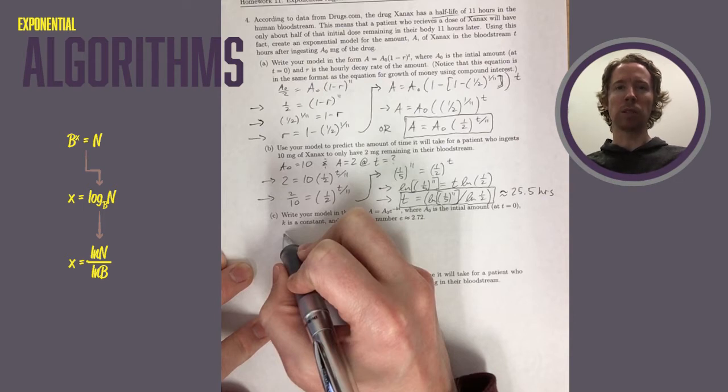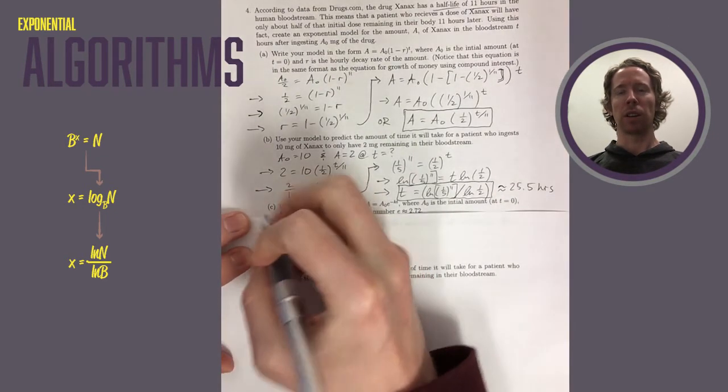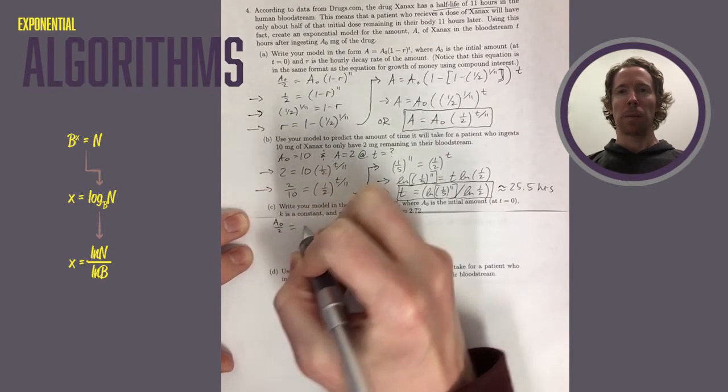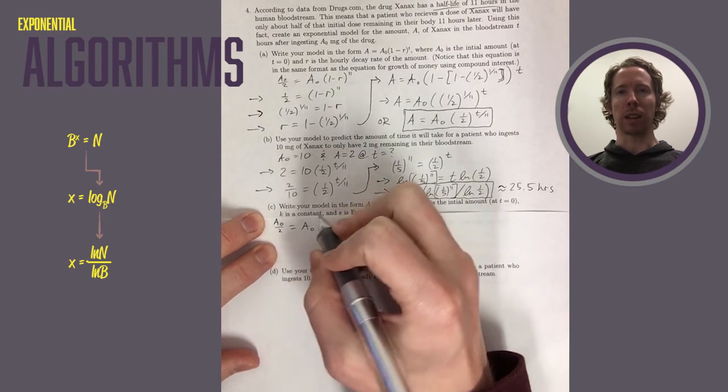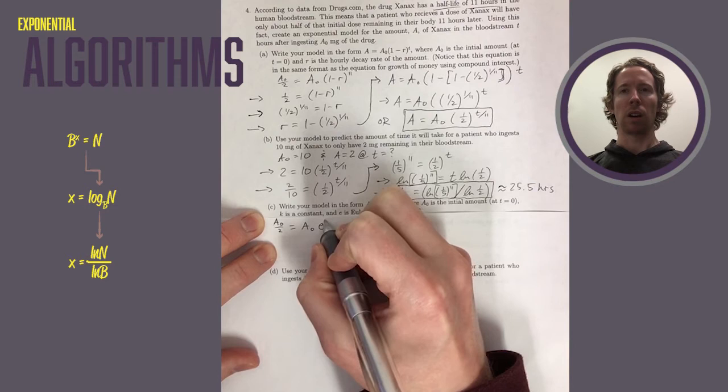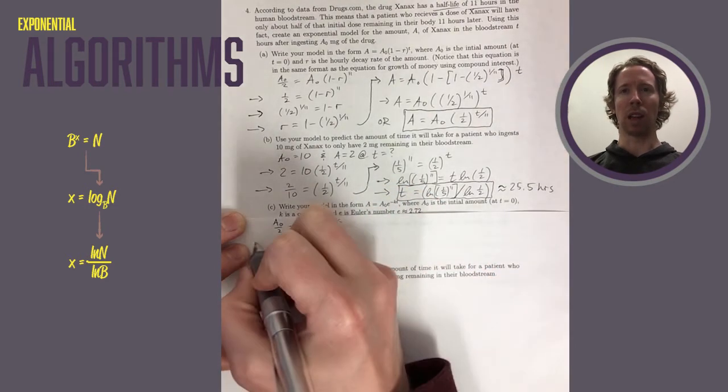Now we're going to write the model using the exponential equation where we use an E for the base. We start out the same way. We know that the half-life is 11. So after 11 hours, the amount A will be A0 over 2. I want to clean the equation up so I can take the natural log of both sides. So I'll divide both sides by A0. On the left, that gives me 1 half. On the right, just E to the negative 11k.